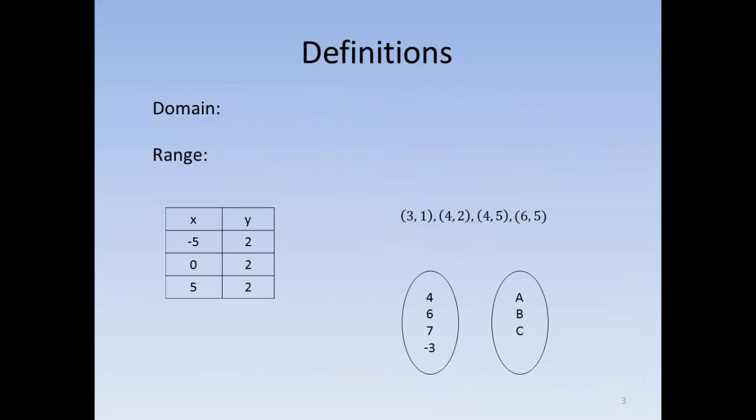Okay, we have two more definitions. The definitions are domain and range. Domain, in a relation, it is the set of all values of the independent variable. In many cases, this is the X values, all of the X values, but it won't always be X. We work with different types of functions.